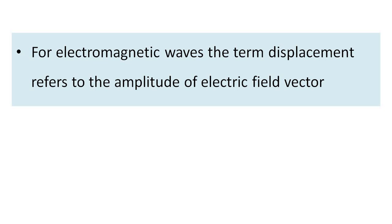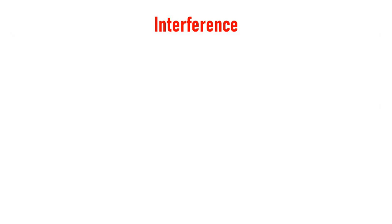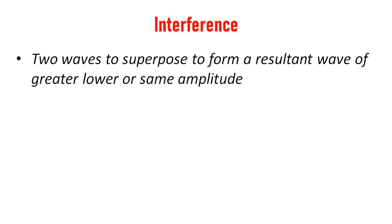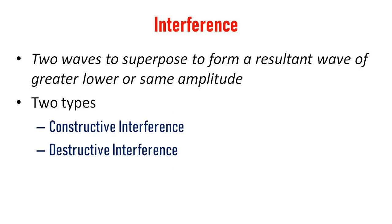The term displacement refers to the amplitude of the electric field vector. We know what interference is — two waves superpose to form a resultant wave of greater, lower, or same amplitude. There are two types: constructive interference and destructive interference.